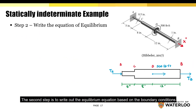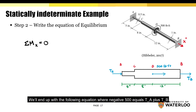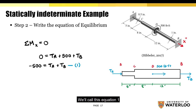The second step is to write out the equilibrium equation based on the boundary conditions. The reaction torques at points A and B are T-A and T-B respectively. If we take the sum of moments about the x-axis, we'll end up with the following equation, where negative 500 equals T-A plus T-B. We'll call this equation 1.